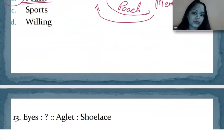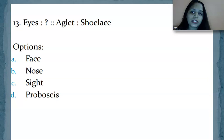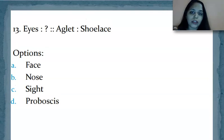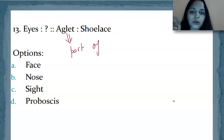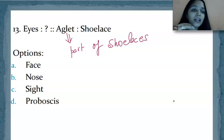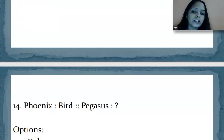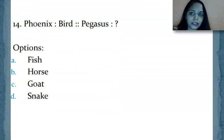Now come to the next question. Eyes is related to which one if aglet is related to shoelace? So aglet is a part, you know that aglet is a part of shoelace, part of shoelace. In the same way, eyes are part of what? Obviously part of face. So you already know what the answer will be. No need to even say it. Let's move ahead. You all should know this very easily.